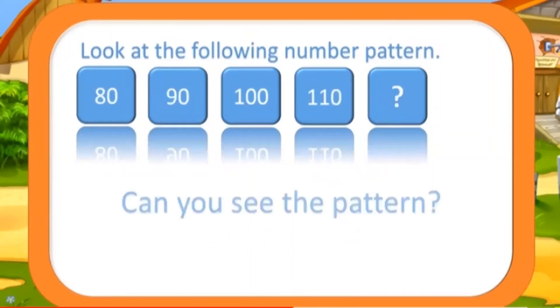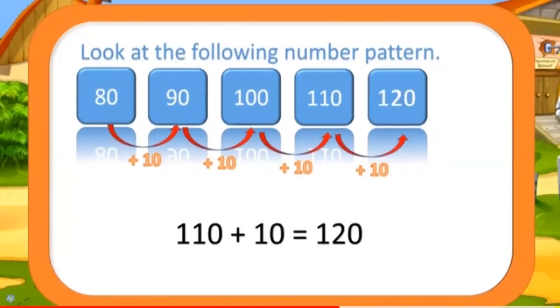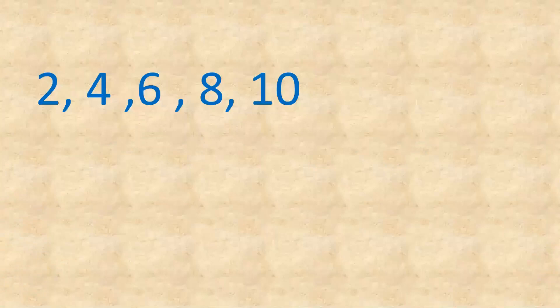Next example: 80, 90, 100, 110. Can you see the pattern? Here you can see a difference of 10 between each number. So the next number will be 110 plus 10, which is 120.